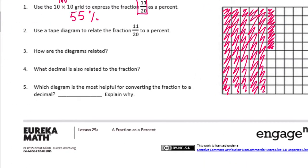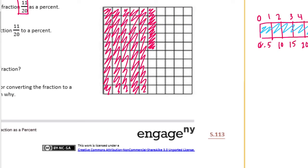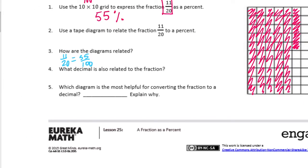How are the diagrams related? So like what we just showed, we can say that 11/20ths is equal to 55/100ths, which we showed on here. So this shows 55/100ths, and this shows that those are equal.